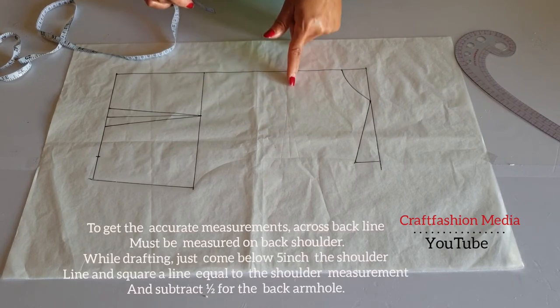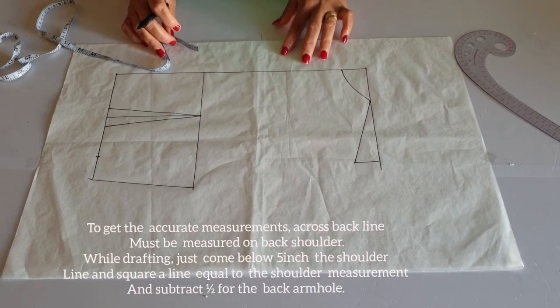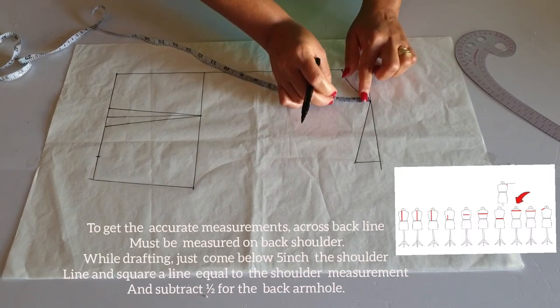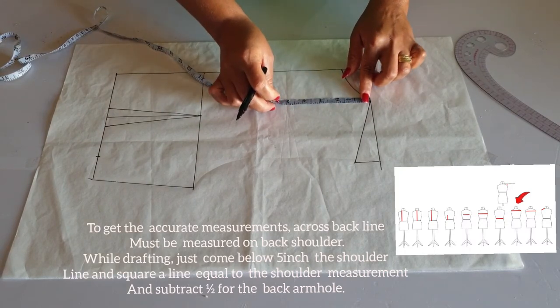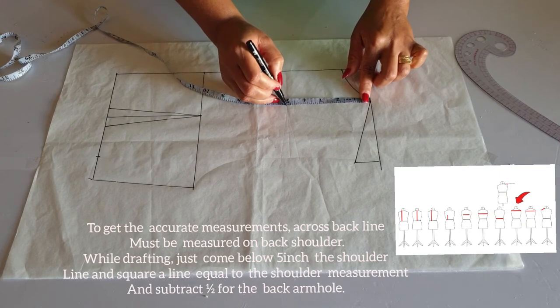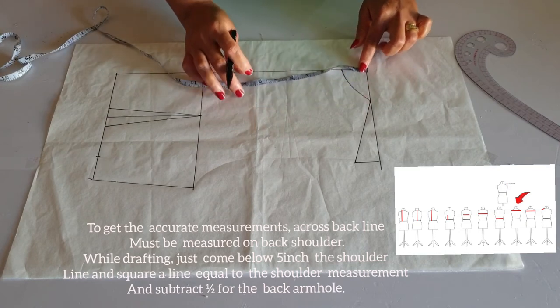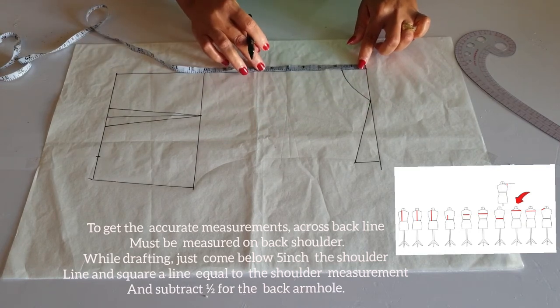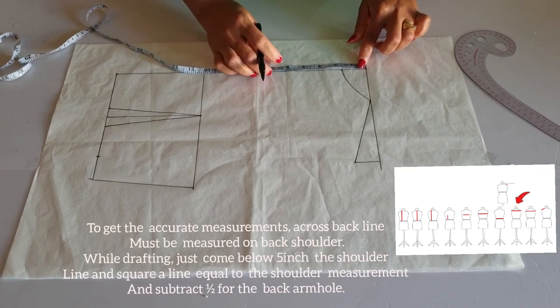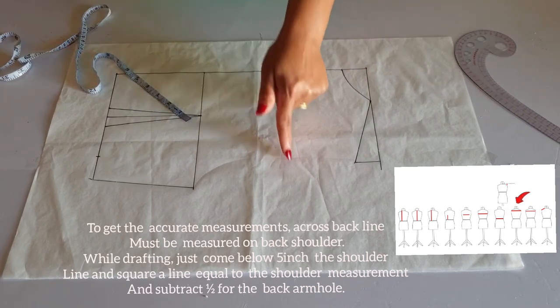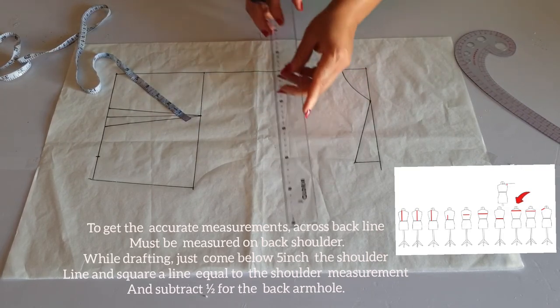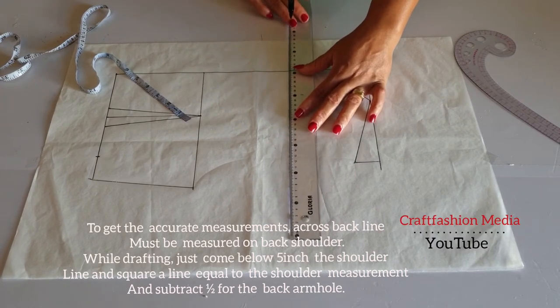And then I will connect with my French curve to the shoulder line. And that is my back neckline. Coming to the across back area measurement, I'm going to mark 5 inches away from back high point shoulder below, and square a line across equal to my shoulder measurement.